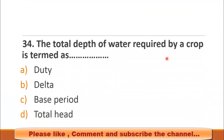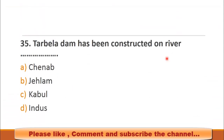MCQ number 34: The total depth of water required by a crop is called — choices: a) duty, b) delta, c) base period, d) total head. The definition of delta is the total depth of water required for a crop, so the right choice is b) delta. MCQ number 35: Tarbela Dam has been constructed on which river? Choices: a) Chenab, b) Jhelum, c) Kabul, d) Indus River. The right choice is d) Indus River.